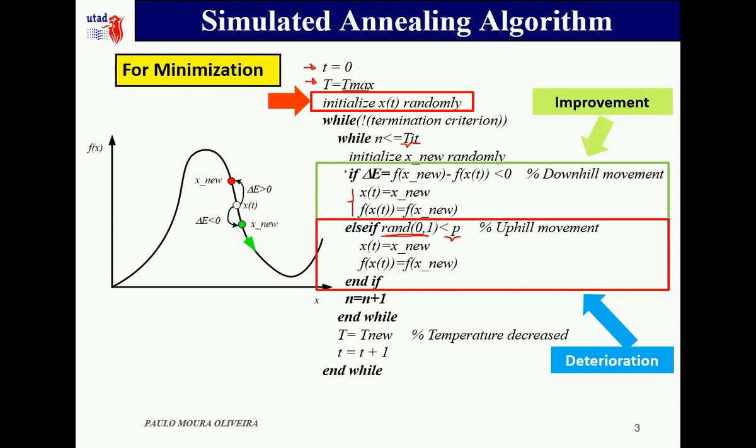At the end of this cycle, the new temperature is evaluated and decreased. This is also a very important step in simulated annealing. There are different ways to decrease the temperature. This is called the scheduling of the temperature and we are going to see some examples in a few moments.